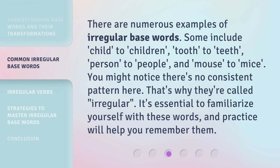There are numerous examples of irregular base words. Some include child to children, tooth to teeth, person to people, and mouse to mice. You might notice there's no consistent pattern here — that's why they're called irregular. It's essential to familiarize yourself with these words, and practice will help you remember them.